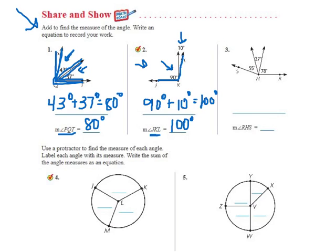Next one, the measure of angle R, H, S. So they want us to go from here, which is the R, to the H, to the S, so the whole thing. And this time they've broken it up into three. We've got one that's 78, one that's 27, and one that's 55. So all I would do is add 78 degrees plus 27 degrees plus 55 degrees. When I do that, it gives me 160 degrees.